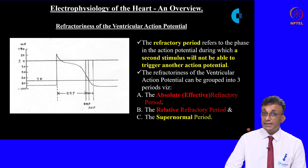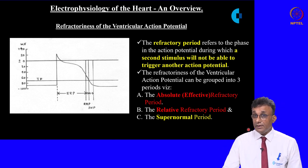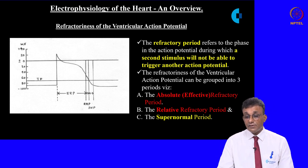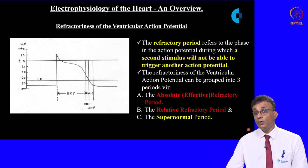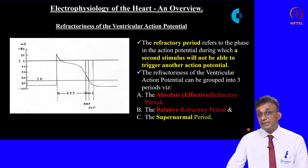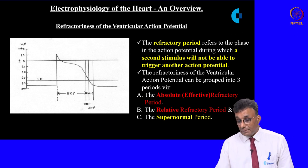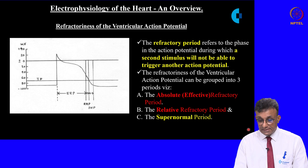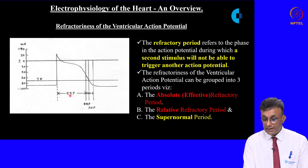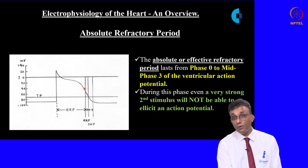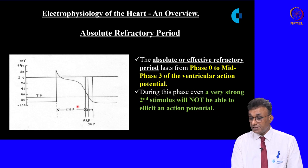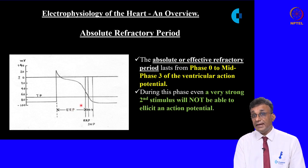Refractoriness of the ventricular action potential is important for understanding how arrhythmias are generated. The refractory period is a period where a second stimulus will not generate another impulse. There are three types: the effective or absolute refractory period, the relative refractory period, and the supernormal phase. The absolute refractory period extends from phase 0 up to the mid portion of phase 3, during which even a strong second stimulus will not elicit an action potential.